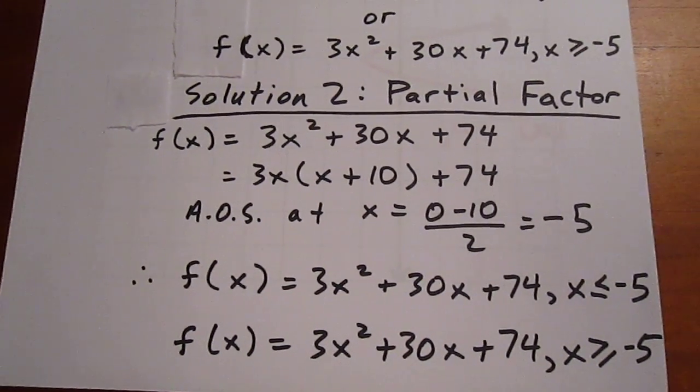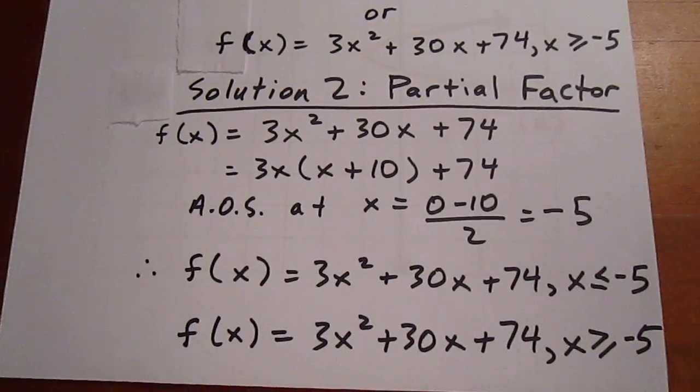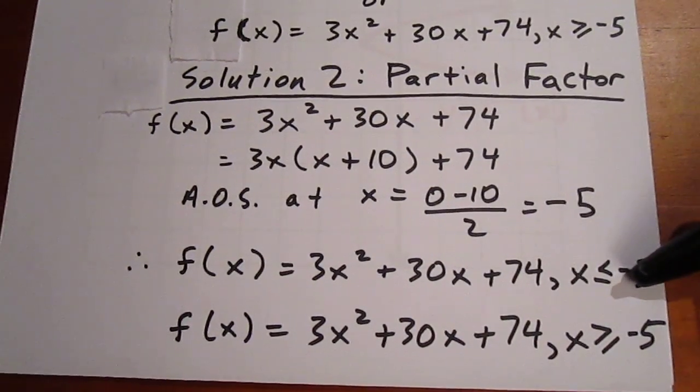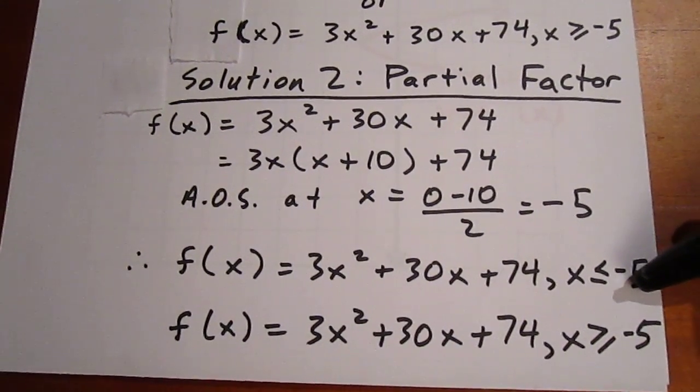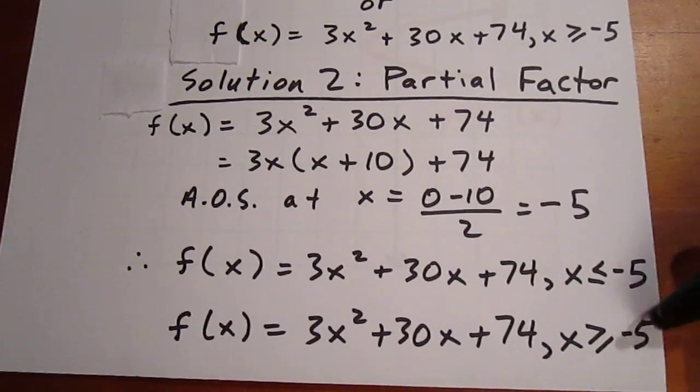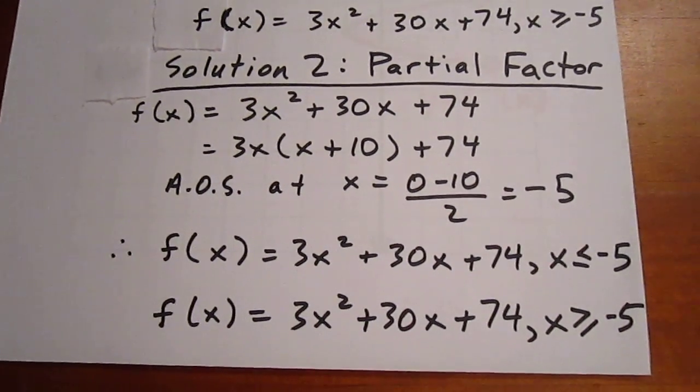So we get an axis of symmetry at -5. Then our f(x) value would have a restriction of x ≤ -5, or a restriction of x ≥ -5.